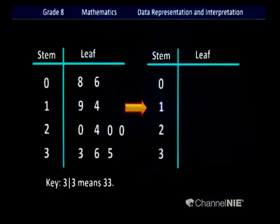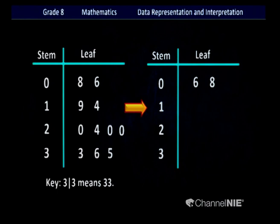Is the stem and leaf diagram completed? Not yet. Have a look at the leaf side — the order is not clearly arranged; it is not in the correct order. Therefore I am going to rearrange it according to ascending order. For stem 0, leaf has 8 and 6. The smaller one is 6, so we mention 6 first, then 8. In the second row, leaf has 9 and 4 — rearranged as 4, then 9.